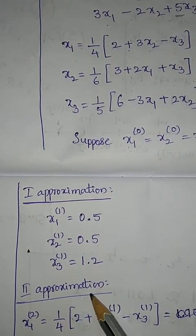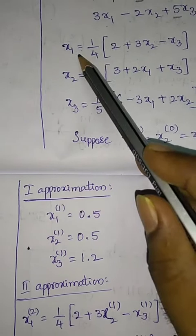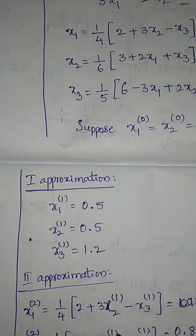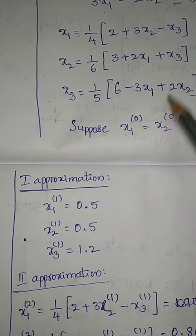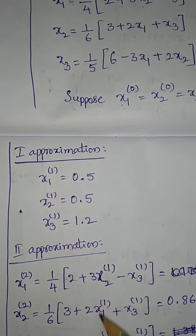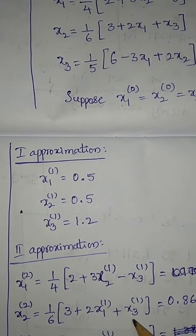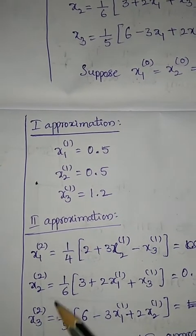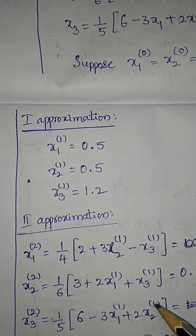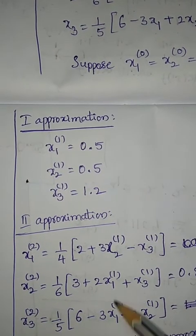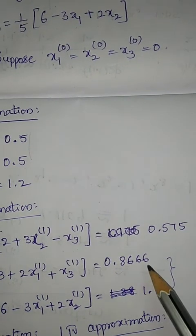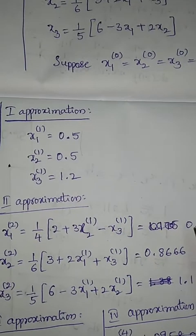The second approximation: x1(2) = (1/4)(2 + 3·x2(1) − x3(1)); x2(2) = (1/6)(3 + 2·x1(1) + x3(1)); x3(2) = (1/5)(6 − 3·x1(1) + 2·x2(1)). Substituting the first approximation values gives the second approximation results as approximately 0.575, 0.8666, and 1.1. These can be calculated using a calculator.